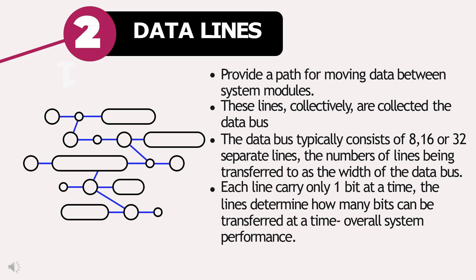Data Line: Data line provides a path of moving data between systems and modules. These lines collectively are called the data bus. The data bus typically consists of 8, 16, or 32 separate lines. The number of lines being transformed towards the width of the data bus. Each line carries only one bit at a time. The number of lines determines how many bits can be transferred at a time overall system performance.